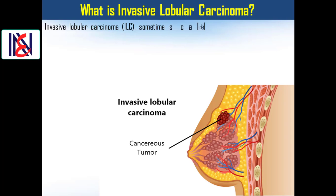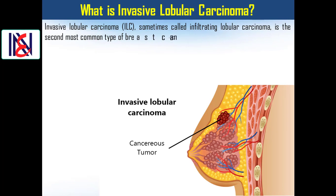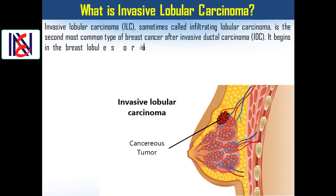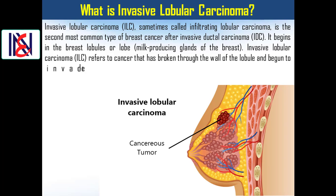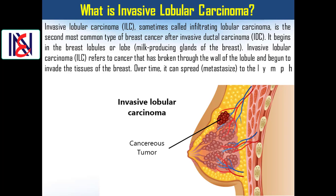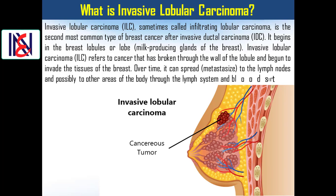Let's start our presentation. What is invasive lobular carcinoma (ILC)? Invasive lobular carcinoma, sometimes called infiltrating lobular carcinoma, is the second most common type of breast cancer after invasive ductal carcinoma (IDC). It begins in the breast lobules — the milk-producing glands of the breast. ILC refers to cancer that has broken through the wall of the lobule and begun to invade the surrounding tissues of the breast.